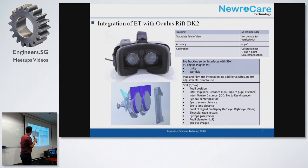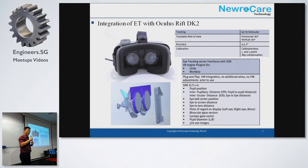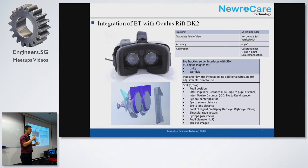One very critical procedure is calibration — how we can accurately capture your gaze. Normally we don't need it if you are okay with the default tolerance of 0.5 to 1 degree. If we need more accuracy, we can do a one-point calibration or a 13-point calibration, presenting 13 points on your screen, which will be much more accurate.